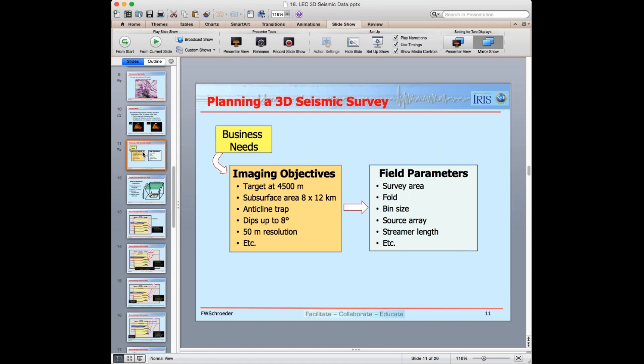Next slide. Planning a 3D survey. First, we need to know what the business needs are. That would define what our imaging objectives are. Here I have targets at 4,500 meters. The subsurface area that I want to have good data for is 8 by 12 kilometers. It's an anticline trap. The steepest structural dips are about eight degrees. I'd like to have 50 meters of resolution. And I might have some other objectives for the 3D survey.